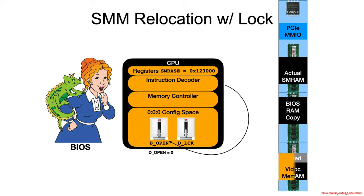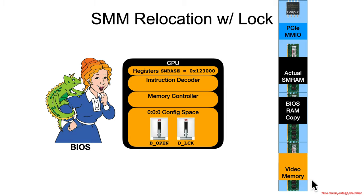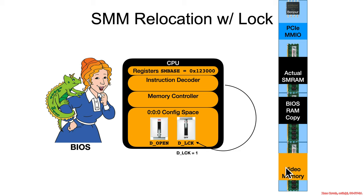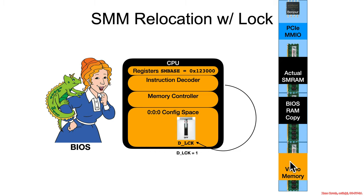Now the BIOS vendor sets deopen to 0, which flips the switch so that DRAM is no longer accessible — this range now translates to video memory, not DRAM. Next they set delock equal to 1. When you do that, you're no longer allowed to flip deopen open or set it to 1, which means no one else can write to DRAM here because it will continuously map to video memory. Effectively, that control goes away and the range is protected.